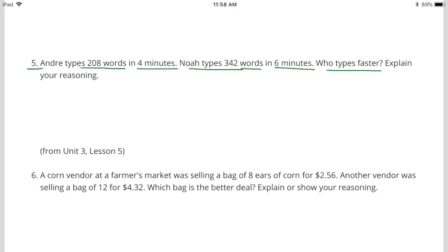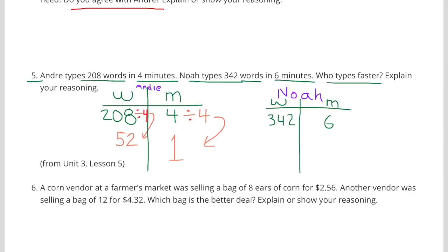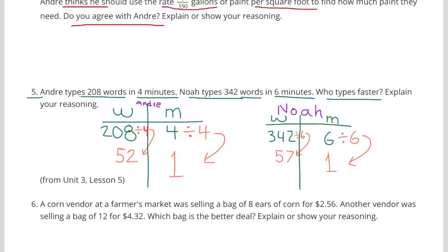Number 5. Andre types 208 words in 4 minutes. Noah types 342 words in 6 minutes. Who types faster? Explain your reasoning. On Andre's chart, I wrote for the number of words, 208, and the number of minutes were 4. On Noah's chart, the number of words are 342, and the number of minutes are 6. Divide 4 by 4 on Andre's chart, and divide 208 by 4 to figure out how many words he types per minute. Andre types 52 words in 1 minute. On Noah's chart, divide 6 by 6 to get 1 minute, and divide 342 words by 6 to get 57 words. Noah types 57 words per minute. Andre types 52 words per minute. So, Noah types more words per minute than Andre.